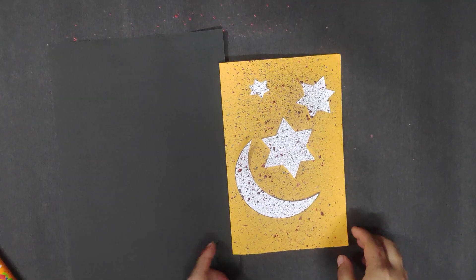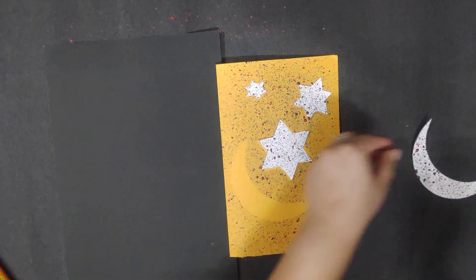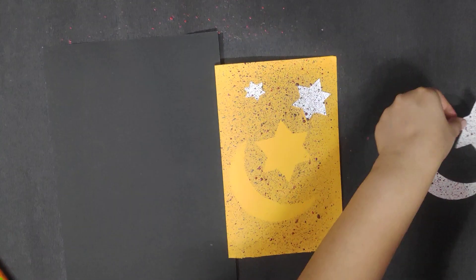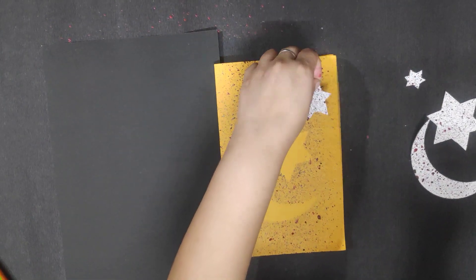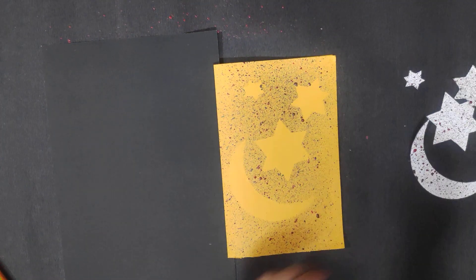After spray, remove your moon and stars cutting from the paper. Now it will look like this.